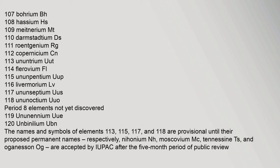The transactinide elements continue from 104 Rutherfordium (Rf) through 118 Ununoctium (Uuo). Period 8 elements not yet discovered include 119 Ununennium (Uue) and 120 Unbinilium (Ubn). The names and symbols of elements 113, 115, 117, and 118 are provisional until their proposed permanent names — Nihonium (Nh), Moscovium (Mc), Tennessine (Ts), and Oganesson (Og) — are accepted by IUPAC after the five-month period of public review.